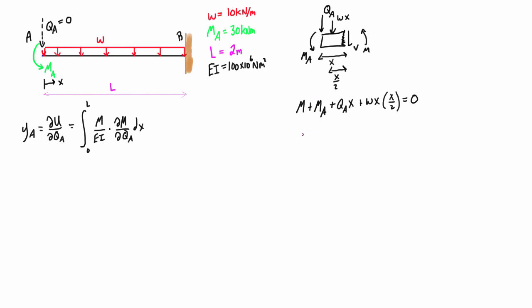What we do is we move everything over to the other side so we get this expression where we have M is equal to negative QA X minus one half WX squared minus MA.